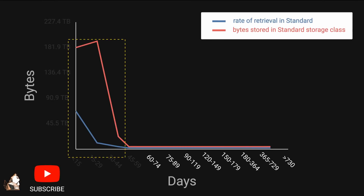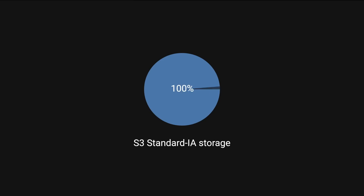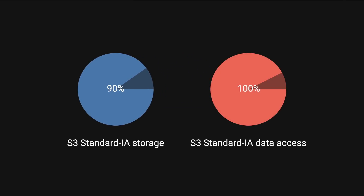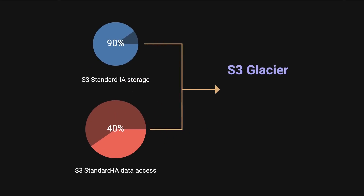They found that user-generated content was accessed frequently within the first 15 days after creation, but access rates dropped significantly thereafter. About 90% of their data was stored in S3 Standard IA, but this only accounted for 30–40% of their overall data access. The analysis revealed that much of Canva's data fit the profile of S3 Glacier Instant Retrieval — infrequent access, but requiring fast retrieval when needed.